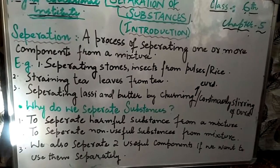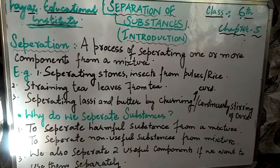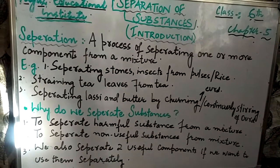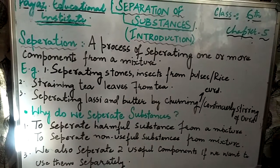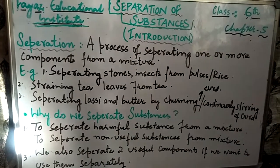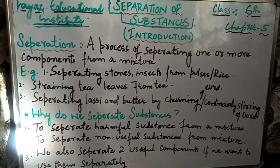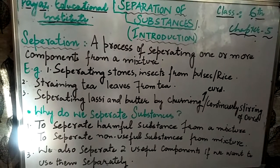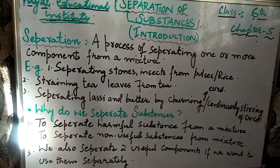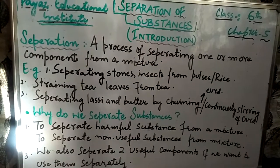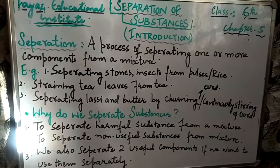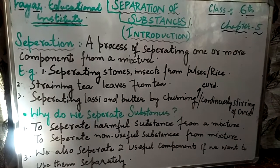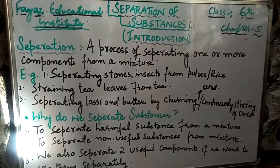We also need to separate harmful substances from a mixture. Why do we do this? The reason is that harmful substances need to be removed from the mixture. For example, separating stones and insects from pulses — we remove them because stones and insects are harmful and should not be consumed.